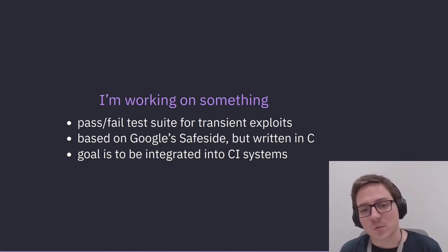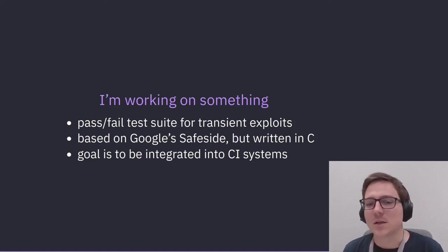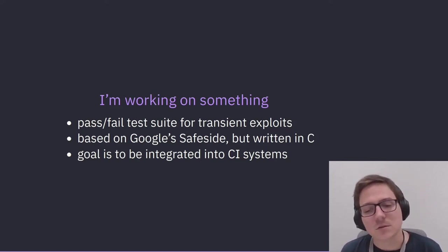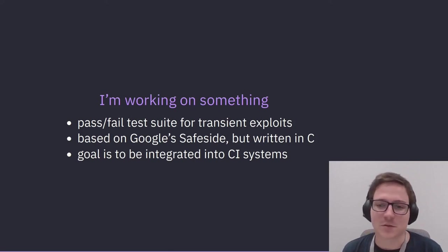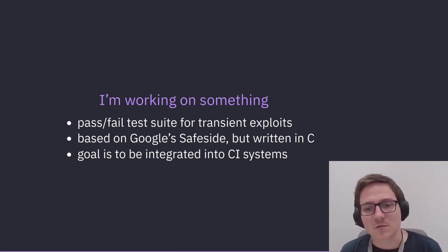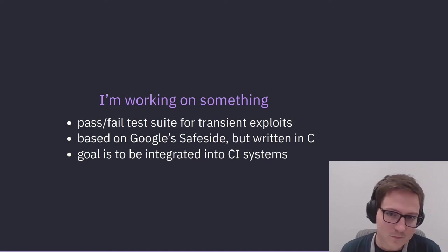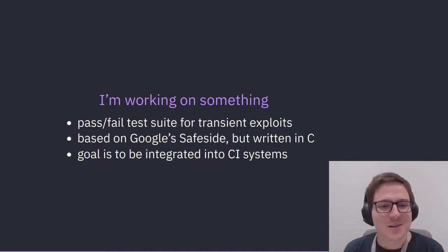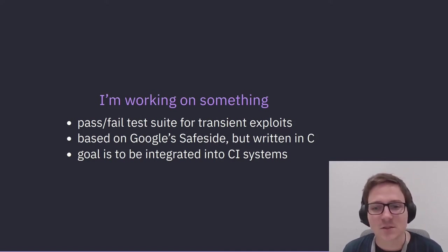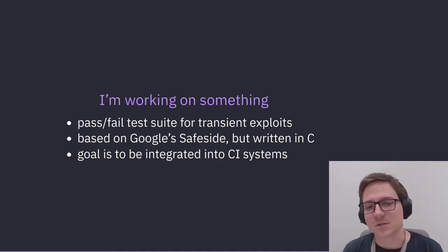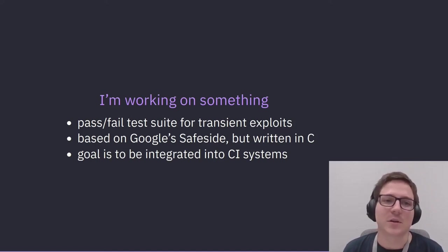I'm not just presenting a pie-in-the-sky idea — I've started working on it. I'm building a test suite for transient execution exploits that is trying to be more of a pass/fail test, something that can run in CI and produce reliable results. Because speculation has a lot of variance, the goal is to attain statistical confidence when we run it that there isn't a problem. It's based on Google SafeSide — using the memory oracle and cache side-channel concepts from SafeSide — but rewritten in pure C, trying to have something that's more palatable to a kernel developer audience. The goal is something we can hand off to testers, get integrated into CI systems, and have that same kind of confidence that our kernels are still secure.